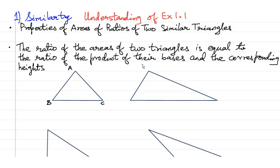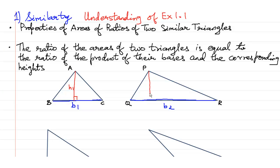Let us say this is the base of the first triangle, B1, and this is the base of the other triangle, B2. Let us say the height of the first triangle on base B1 is H1, and the height of the other triangle on base B2 is H2.